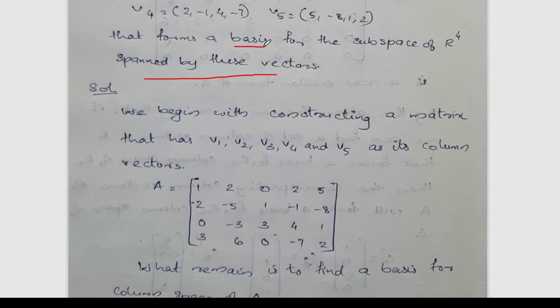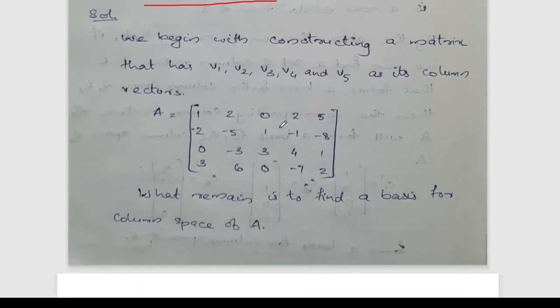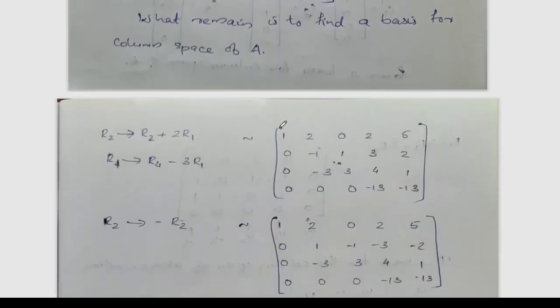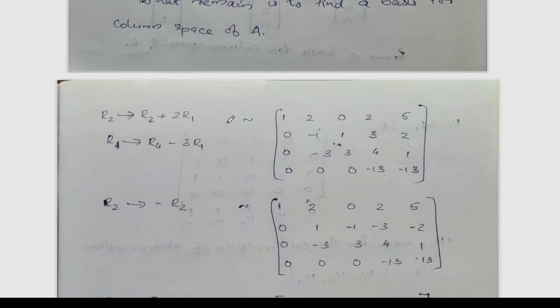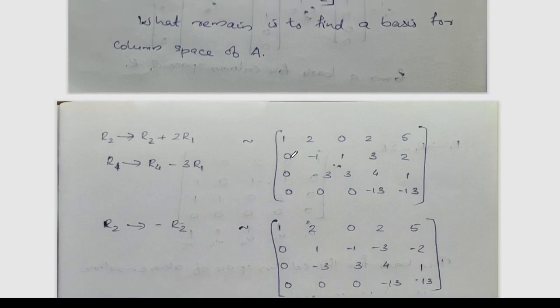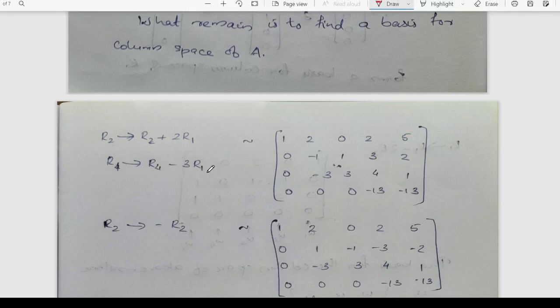Find the basis for the column space of this given matrix. First, R2 becomes R2 plus 2R1; the second row becomes 0, -1, 1, 3, 2. R4 becomes R4 minus 3R1; the last row becomes 0, 0, 0, -13, -13.